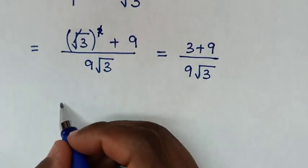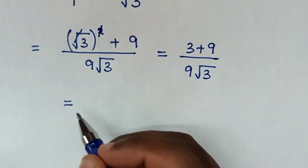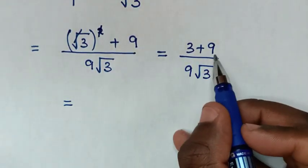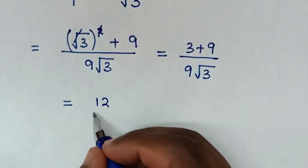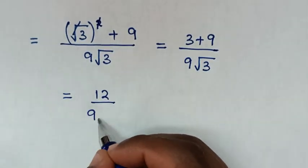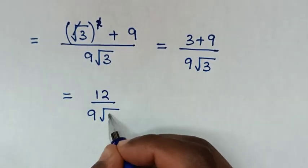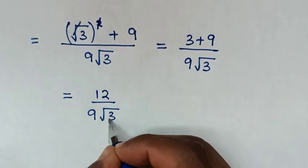Then in the next step, it will be equal to: 3 plus 9 is 12, then over 9 square root of 3.